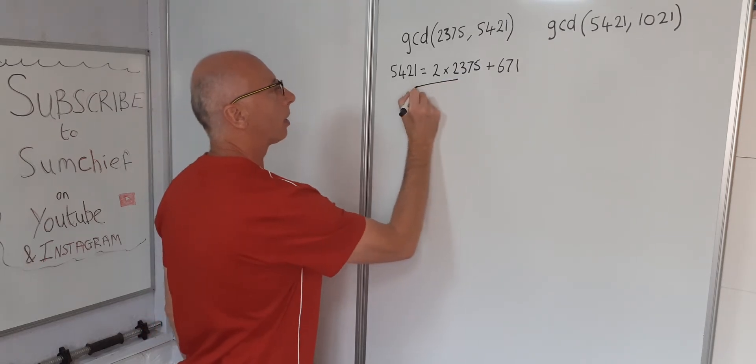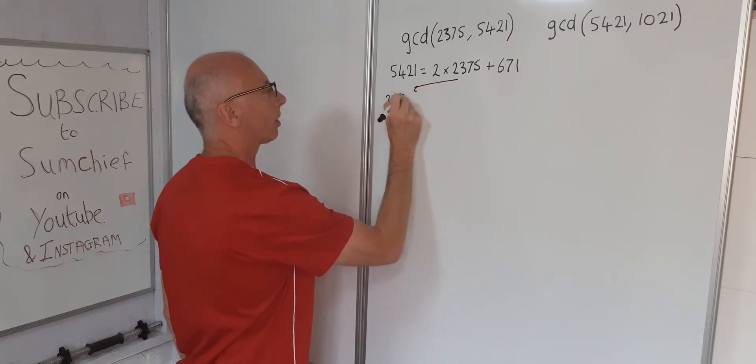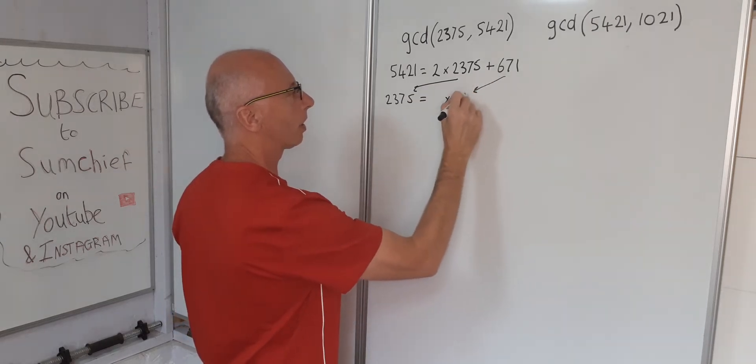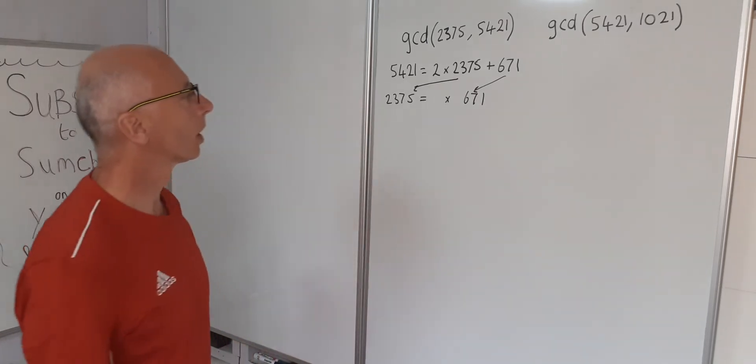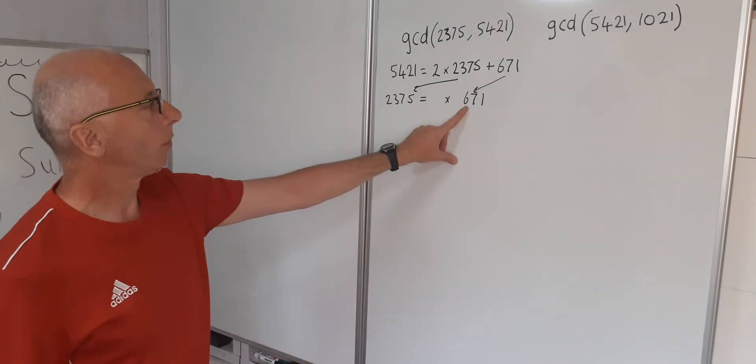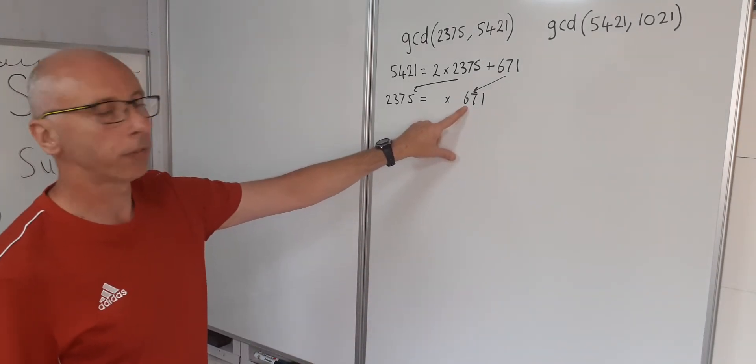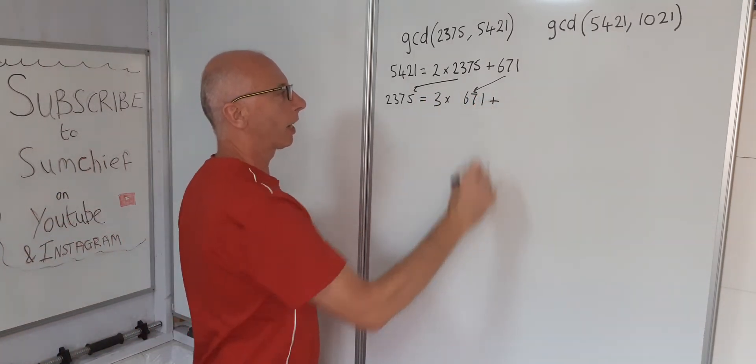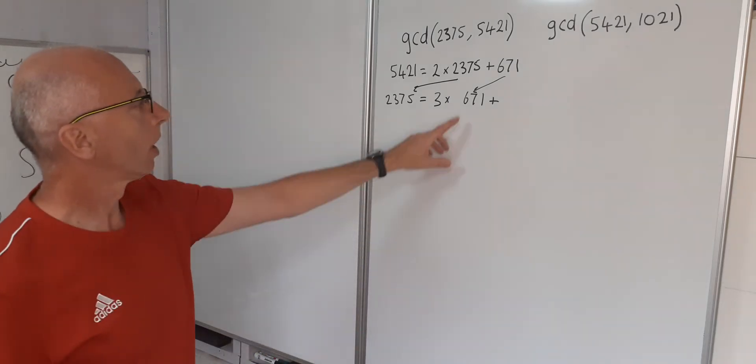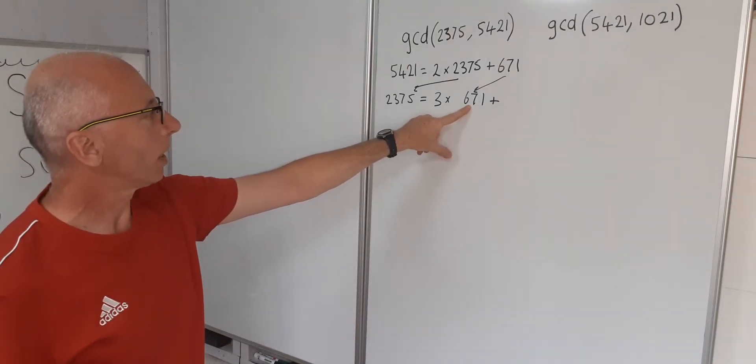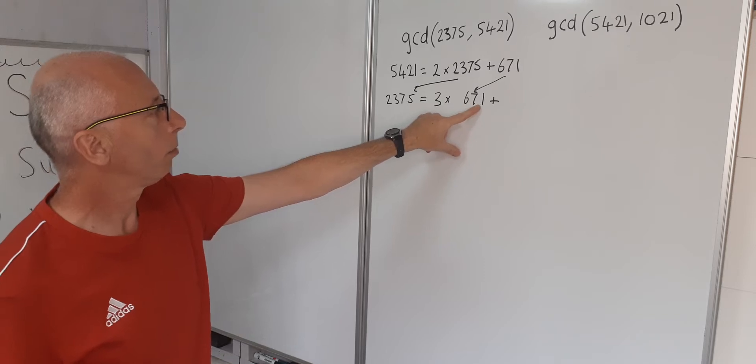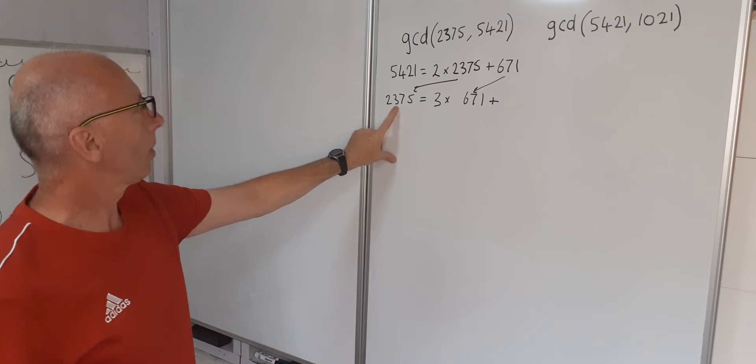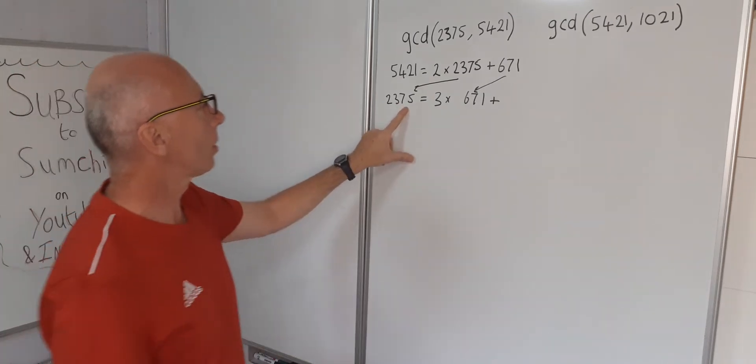So now what we do, we take the 2375 and we make that equal something times the 671. Well 4 times 600 is going to be 2400 so we can see that this is going to be multiplied by 3 which will then give us a remainder. 3 times 671 is 2013. 2375 minus 2013, that's going to give us 362 remainder.